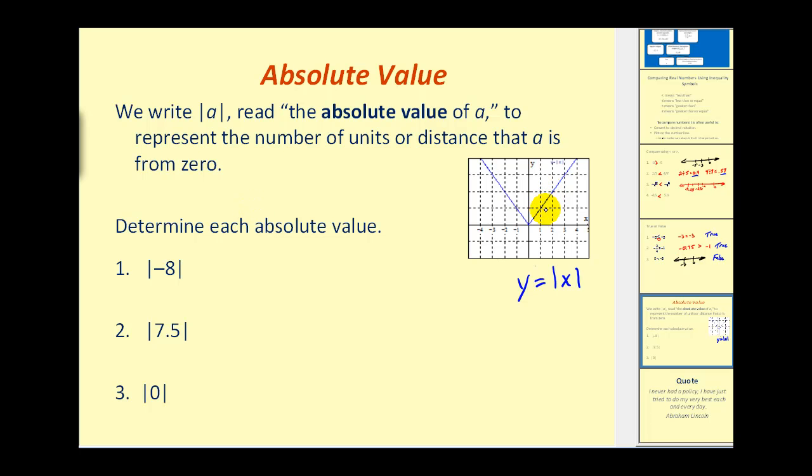So when we graph y equals absolute value of x, we can see that all of the points, except the point (0, 0), are above the x-axis. Therefore, all the y values are positive or could be 0.